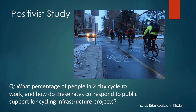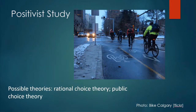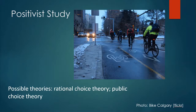The first paper is a positivist study, and it asks: what percentage of people in this city cycle to work, and how do these rates correspond to public support for cycling infrastructure projects? The positivist theories that might be used could include rational choice theory, in which individuals make rational decisions based on a cost-benefit analysis. One individual might bike to work because it is far less expensive than driving; another might drive because it's faster and they can go to more destinations. Public choice theory also looks at how people make rational choices about what to vote for in the political realm.